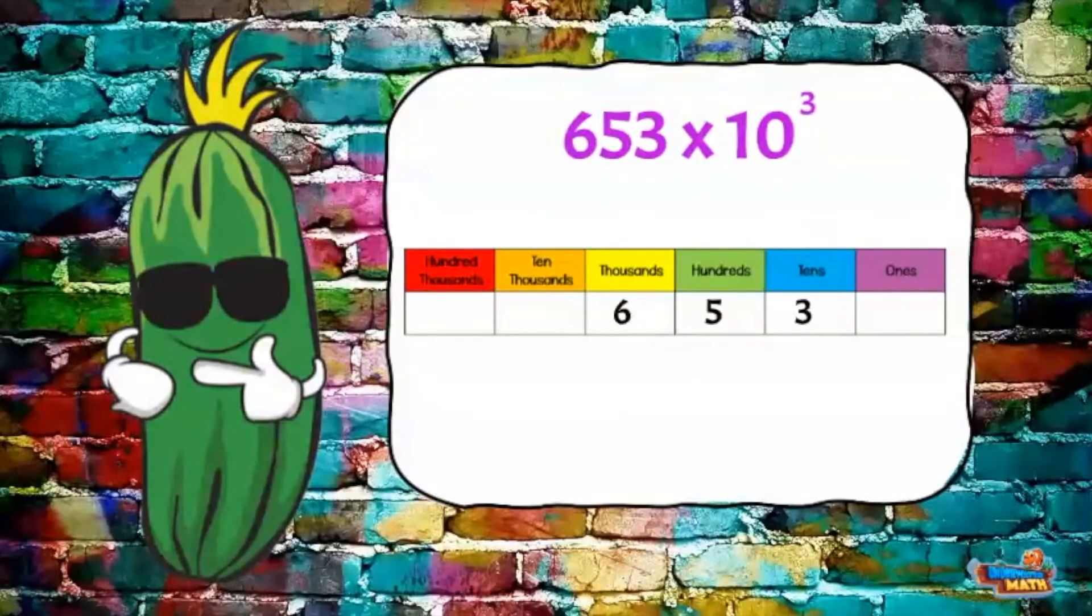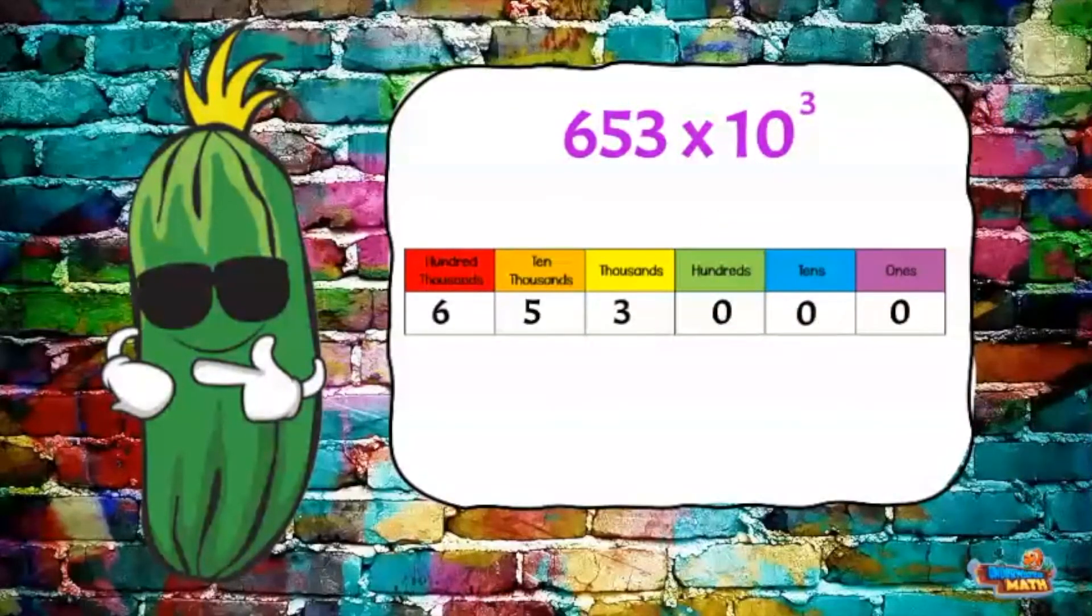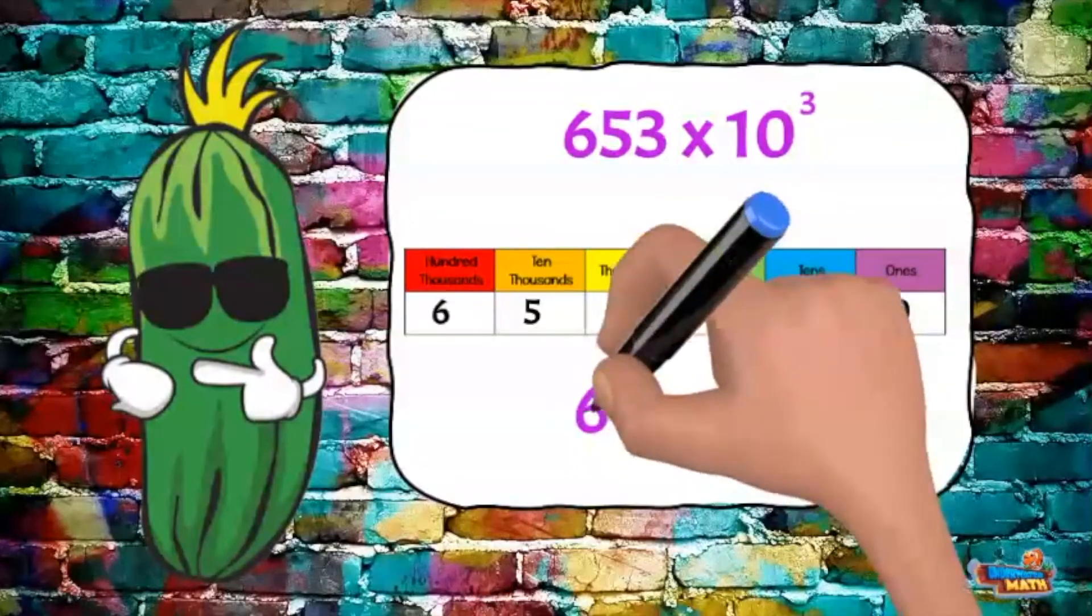I'm going to move each digit over 3 spaces in the place value chart and fill in the empty place values to the right with zeros. This gives me an answer of 653,000.